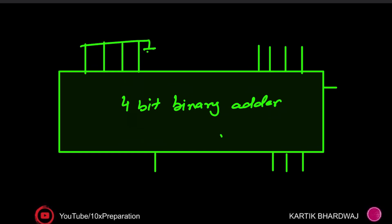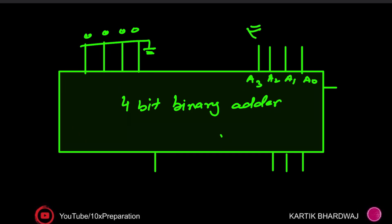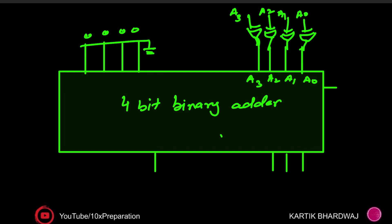We consider all other ports as ground, providing zero to them, and focus on this portion only. There are four pins: a3, a2, a1, and a0. We need to get XOR outputs at each of these — so we have XOR, XOR, XOR, XOR. We again put a3, a2, a1, and a0 at those inputs.